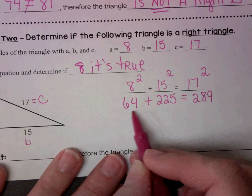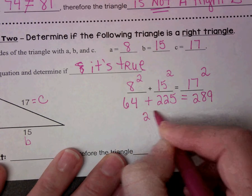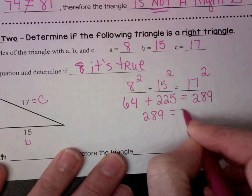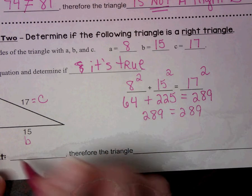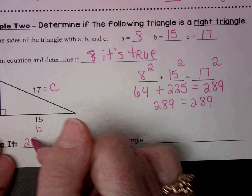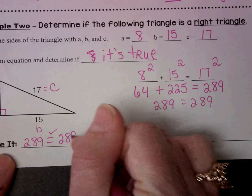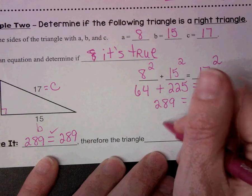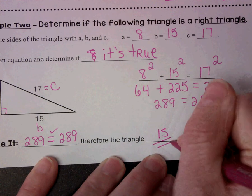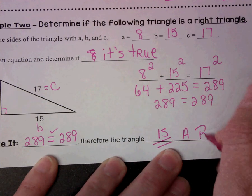So let's test that. Does that add up? What does that add up to? That adds up to 289. So let's prove it. 289 is equal to 289. Therefore, the triangle is a right triangle.